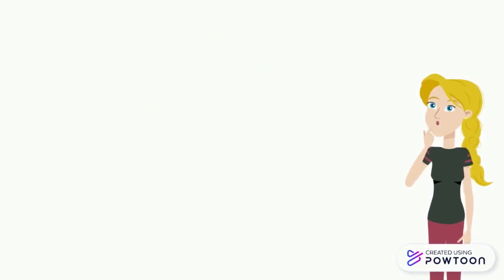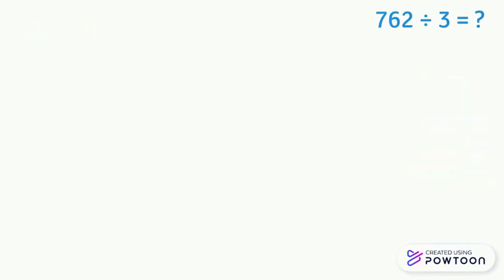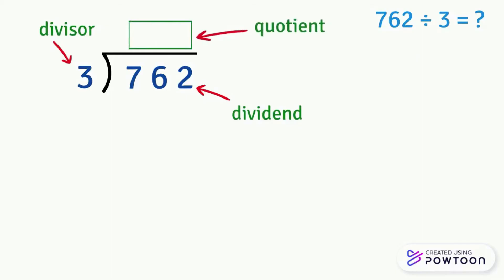What is the division of 762 by 3? To find the answer, first we have to rewrite the equation using the long division symbol. We place the number 762 to the right here and we call it dividend, and we write the 3 to the left here and we call it the divisor. The result is written here above the dividend and it is called the quotient.